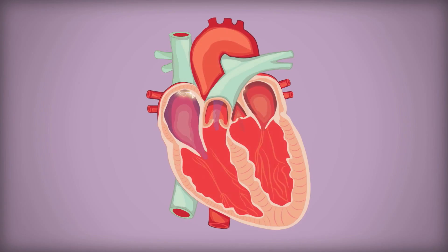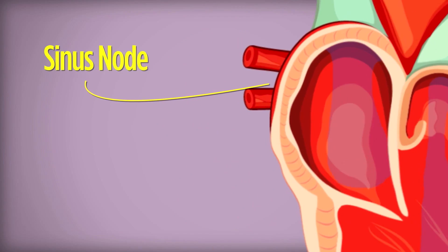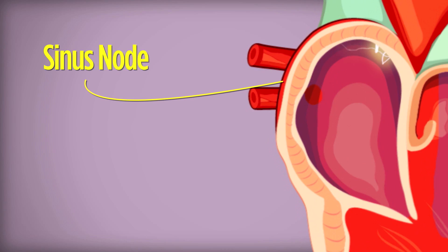In a healthy heart, the rate and rhythm of the heartbeat are controlled by an electrical system. A series of coordinated electrical signals start in a part of the heart called the sinus node.